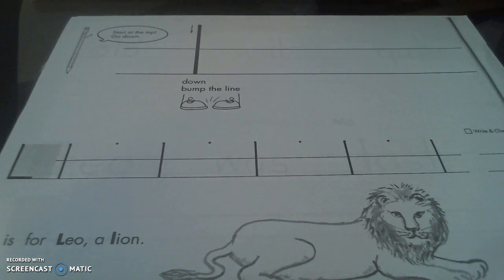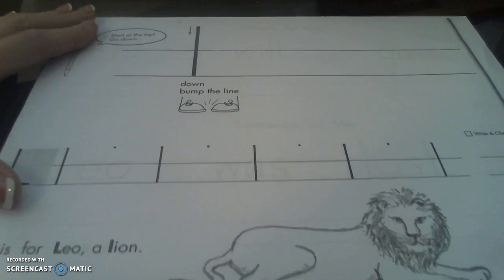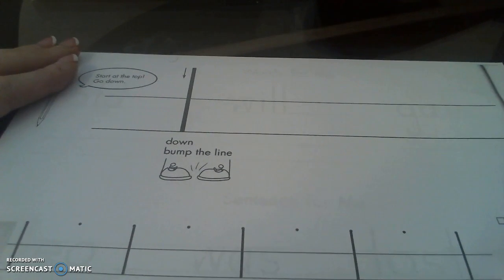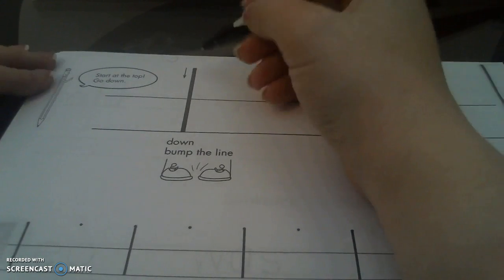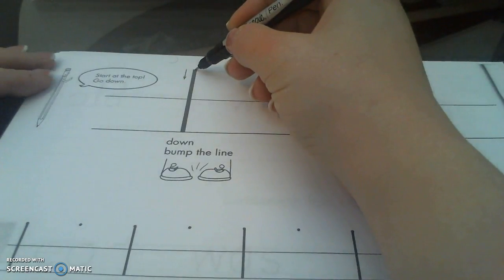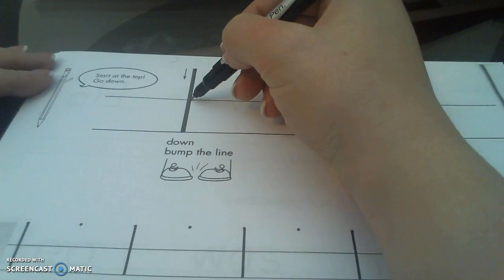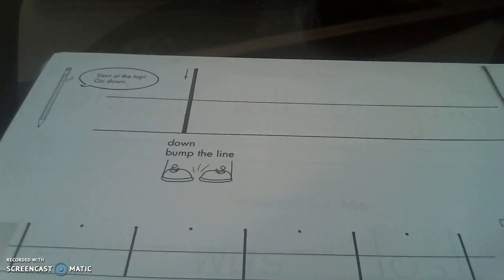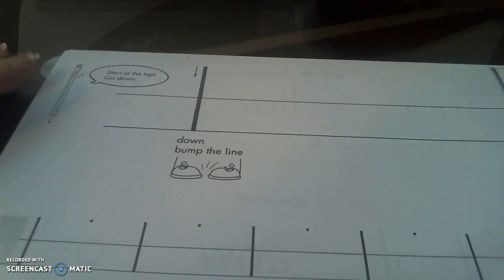Alright guys, we're going to work on lowercase l today. It's probably one of the easiest letters in our alphabet. For lowercase l, we start at the top, bump the middle line, and bump the bottom line. That's it - it's one line down.